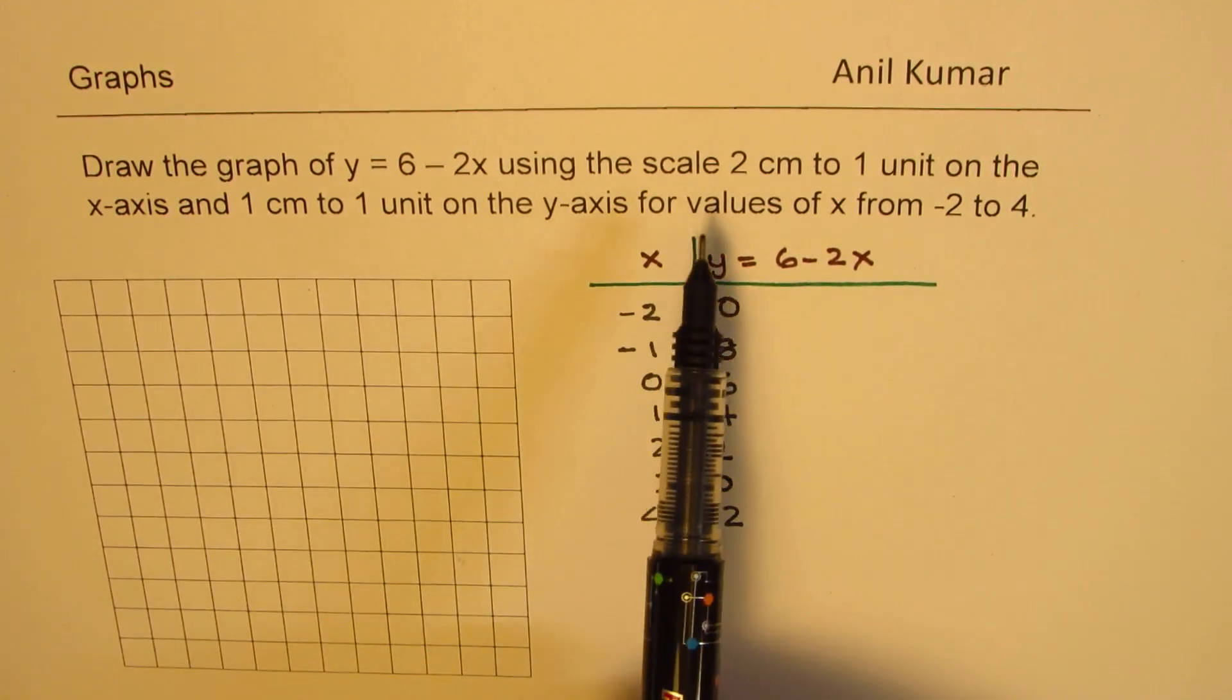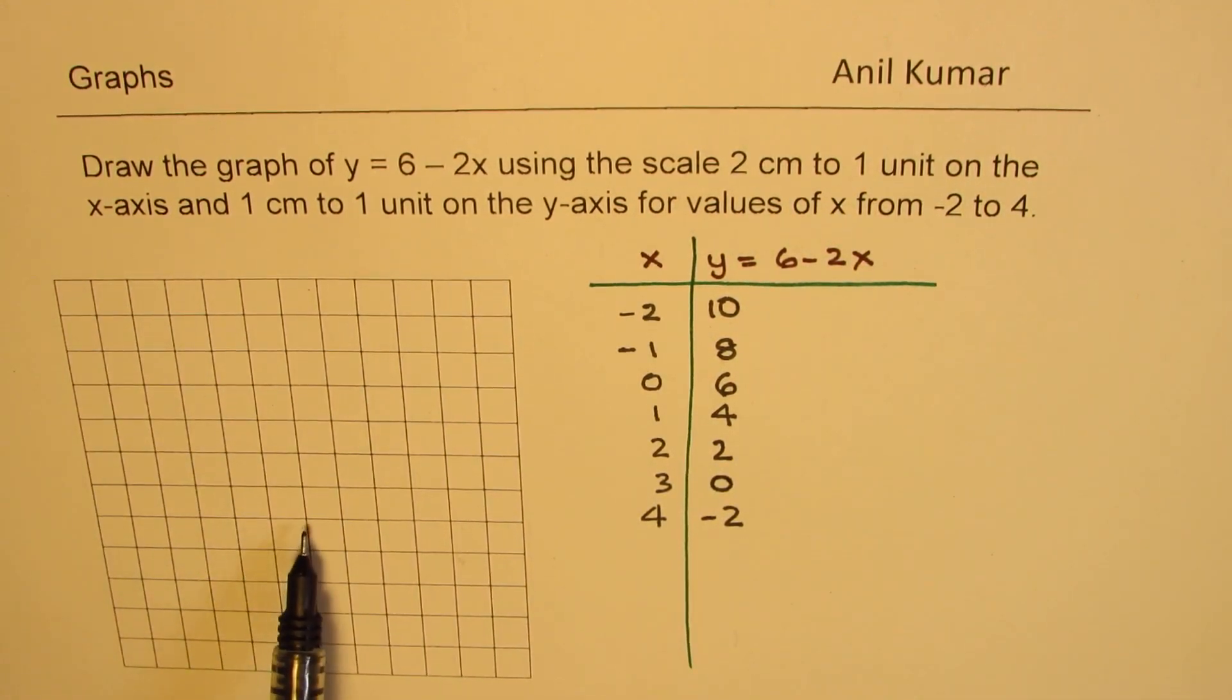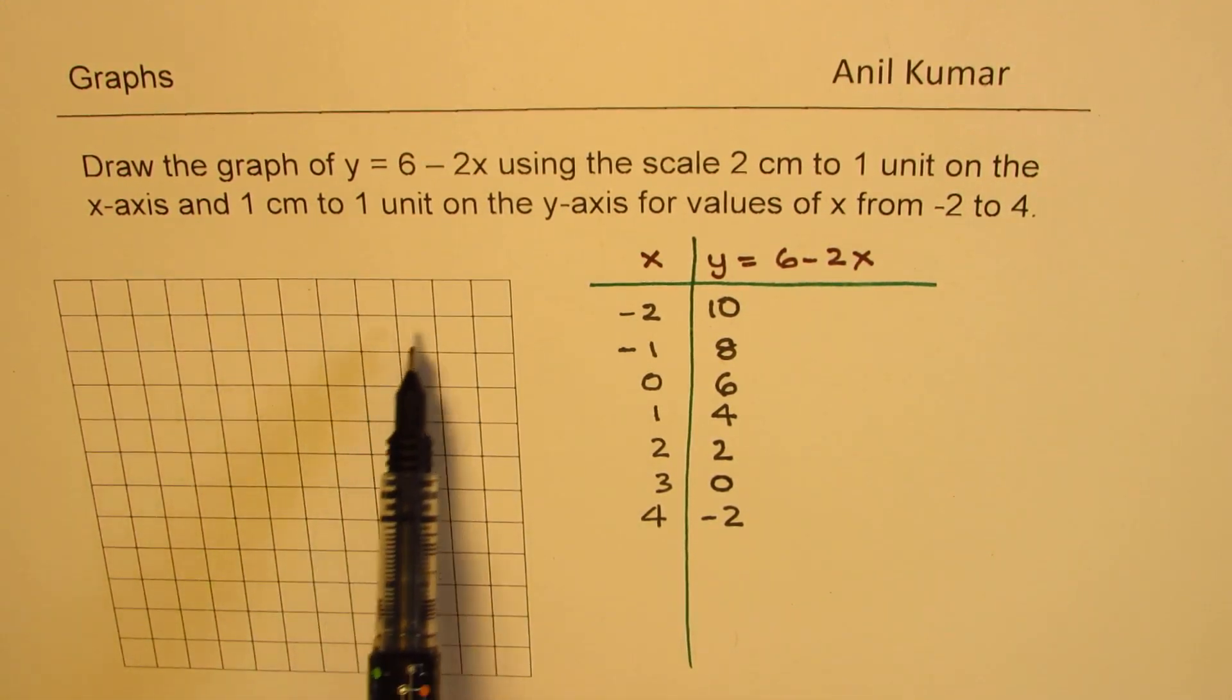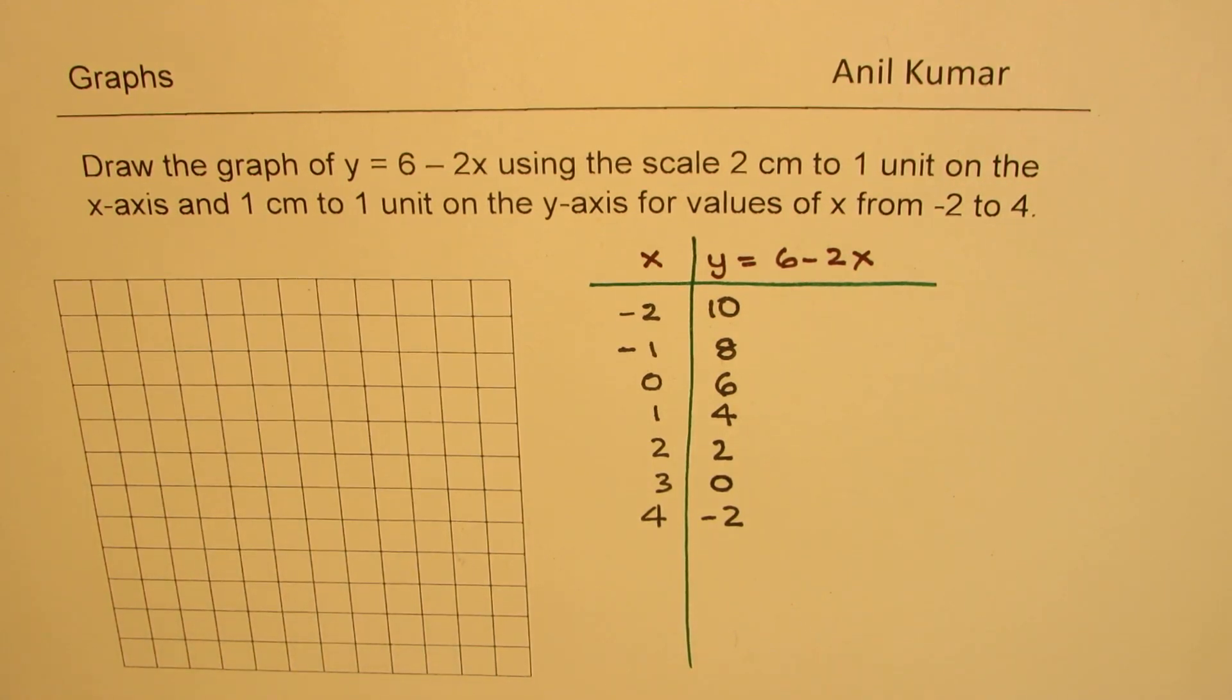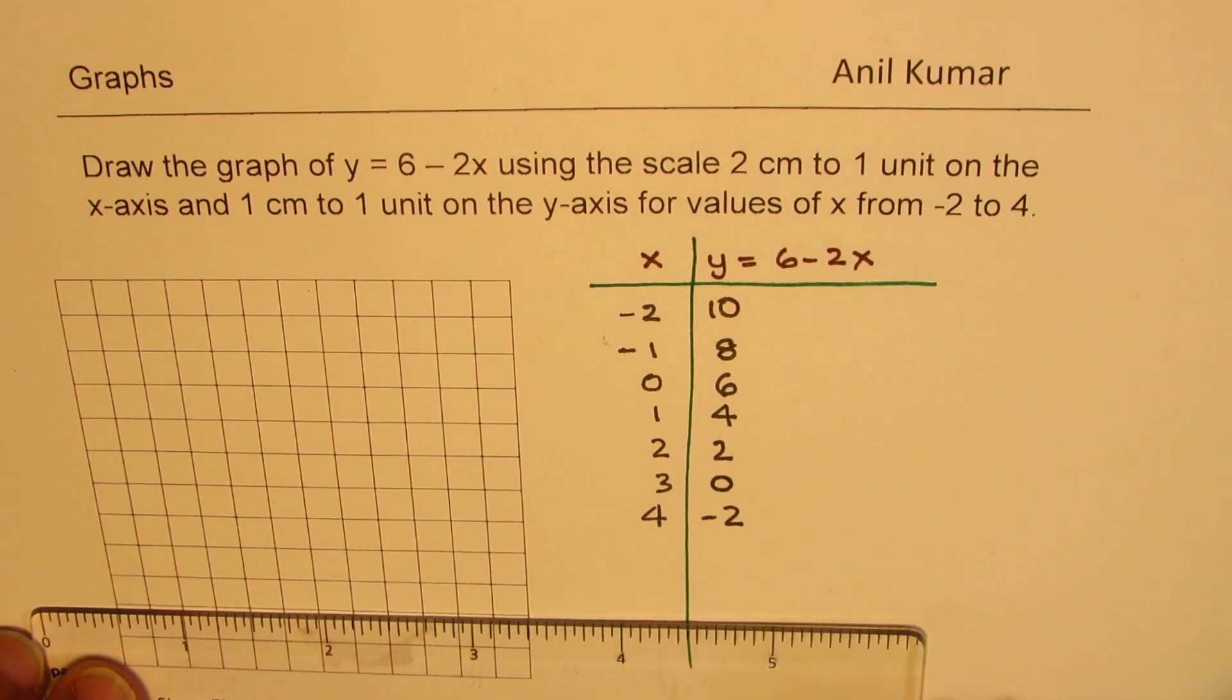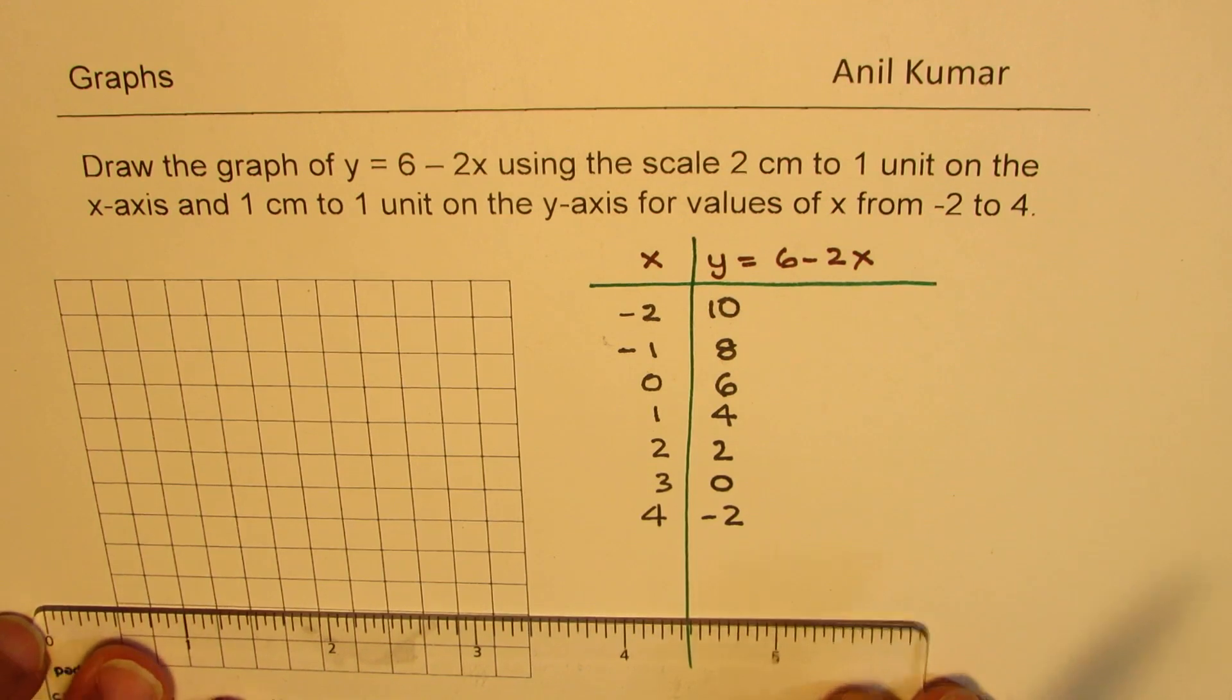Now we are given a scale that 2 centimeter to 1 unit on the x-axis, right? So that would be like 1, 1 unit, and 1 unit on the 1 centimeter. Let us say this is a centimeter grid. And we want to actually represent from 10 to minus 2. So most of the values here are positive, just one negative value. So we'll take a scale and we'll put the horizontal line slightly over here. So we might get most of the points with that. So I'll make the x-axis right here.